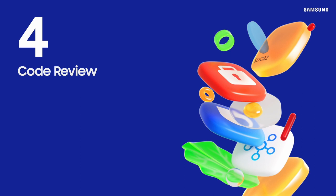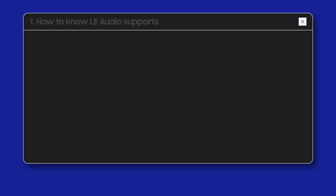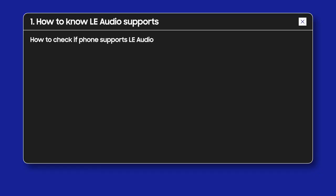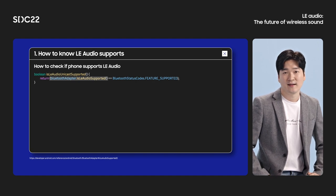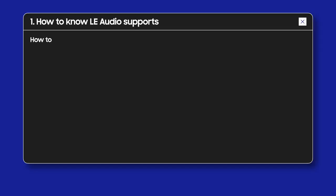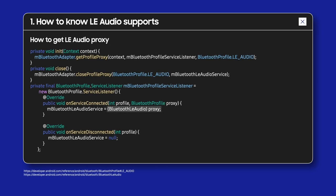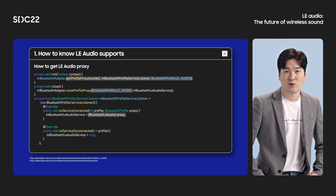All these features can be supported by third-party applications with the Android Development API. First, let's check out the API to see whether LE Audio is supported. In Android API Level 33, the LE Audio supported API is added to check whether the phone supports LE Audio. Note that this can be used when Bluetooth is turned on. The BluetoothLeAudio class is a proxy object for controlling LE Audio services through IPC, and it can be used by calling the GetProfileProxy API in the same way as other existing Bluetooth profiles. Also, the LE Audio type of Bluetooth profile is added to API Level 33. You can always check the Android developer site for more information.